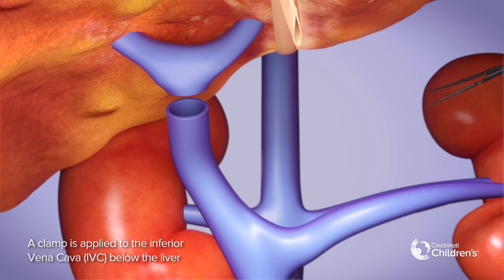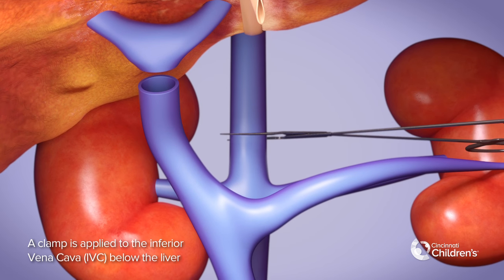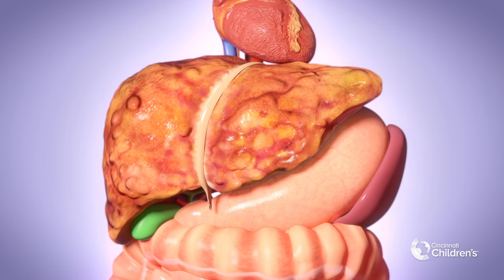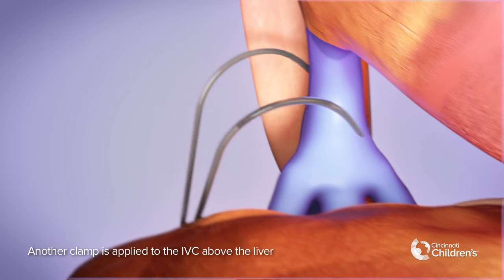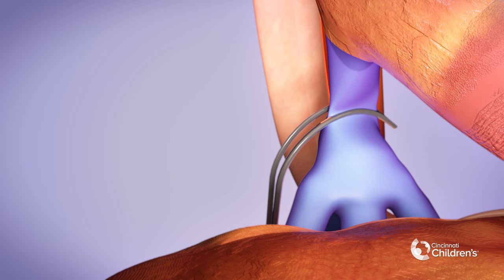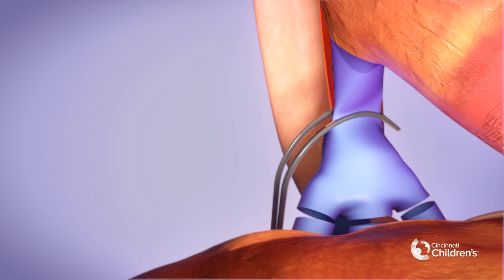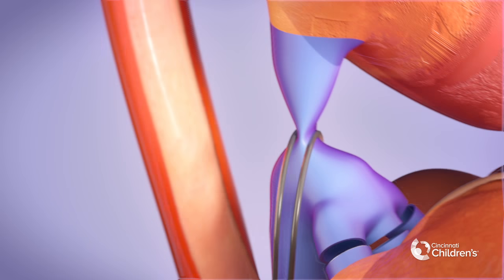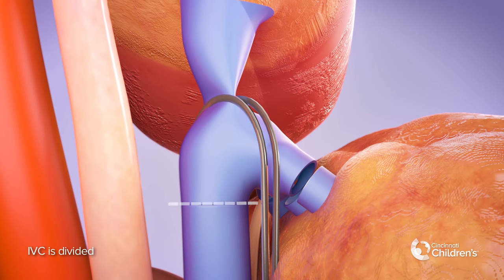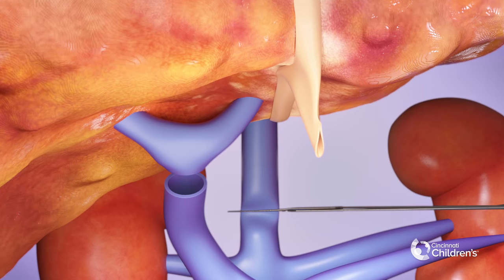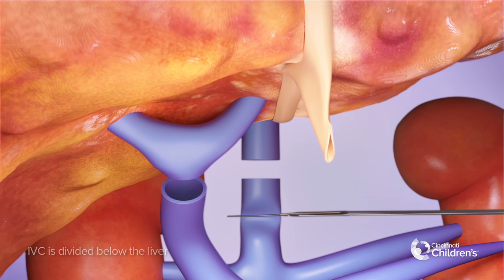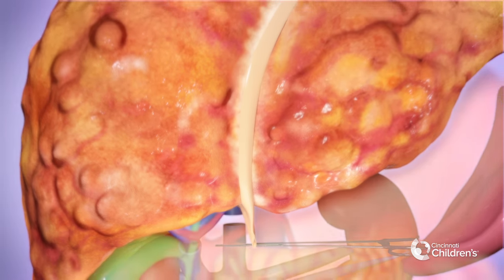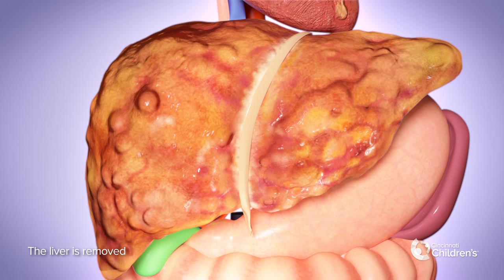A clamp is applied to the inferior vena cava, or IVC, below the liver. Another clamp is applied to the IVC above the liver. The hepatic veins are divided. The IVC is divided below the liver. The diseased liver is removed.